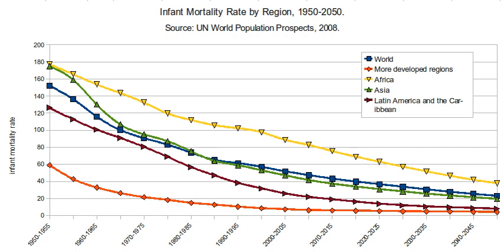Child mortality is the death of a child before the child's fifth birthday, measured as the under-5 child mortality rate (U5MR). National statistics sometimes group these two mortality rates together. Globally, 9.2 million children die each year before their fifth birthday; more than 60% of these deaths are seen as being avoidable with low-cost measures such as continuous breastfeeding, vaccinations, and improved nutrition. Infant mortality rate was an indicator used to monitor progress towards the fourth goal of the Millennium Development Goals of the United Nations for the year 2015.